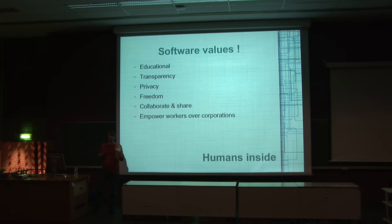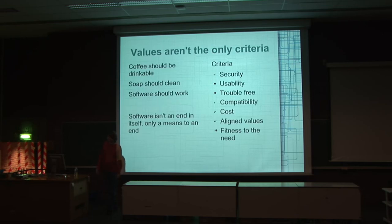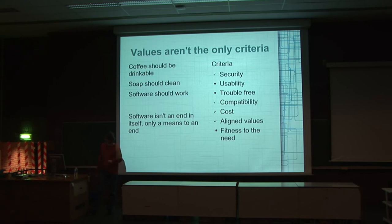So we have to explain to them that there are developers inside, there are humans behind the software they use. Of course, that's not the only criteria. Value is not the only criteria they use. They would buy fair trade coffee, but it has to be drinkable, and the soap should clean, and the software should work. For them and for most people, the software isn't an end by itself — that's only a means, a tool to a different, broader end. And the criteria are obviously security — where open source is usually better — and cost, and the values I just mentioned that are more aligned with their values.